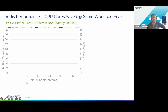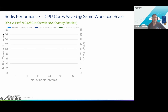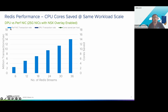In this chart, the x-axis shows the number of Redis streams going between one ESX host to the other, increasing from left to right. The left y-axis is aggregate transaction rate in million transactions per second, and the right secondary y-axis shows core savings. The light blue is the baseline case using the performance NIC. As I increase the number of Redis streams from 6 to 36, the transaction rate goes up, achieving about 14 million transactions per second at 36 Redis streams.